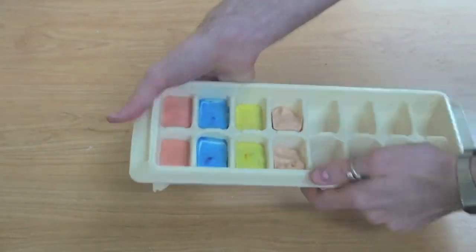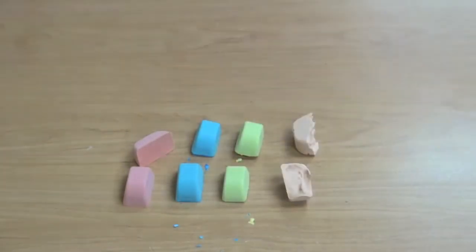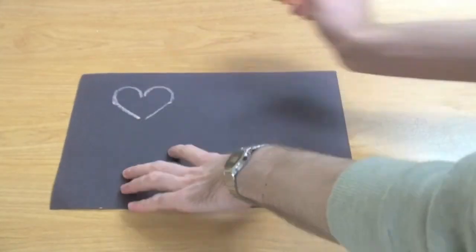Once completely dry, you can give your ice cube tray a twist and try and pop them out. Look, they work great! You can draw all over your surfaces either on black paper or outside on concrete.